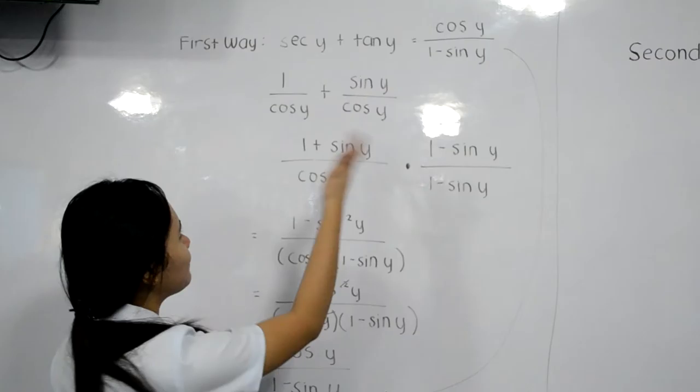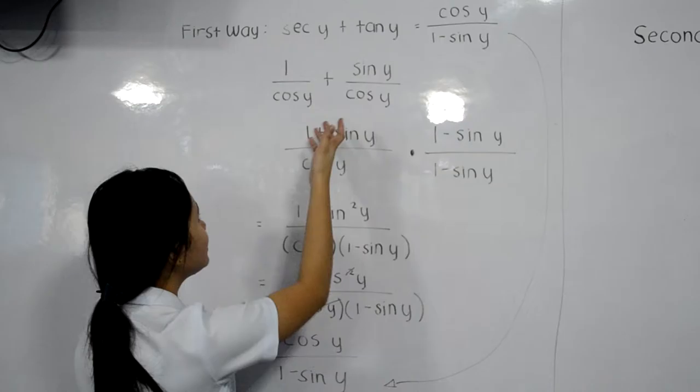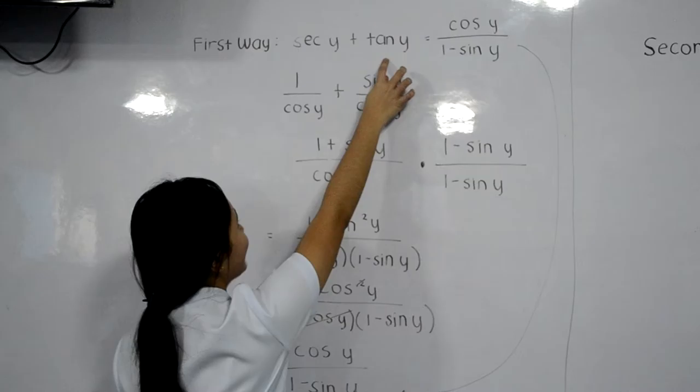Let's prove tangent y plus secant y equals cosine y over 1 minus sine y. The equivalent of secant y in the reciprocal identities is 1 over cosine y, and the equivalent of tangent y in the quotient identities is sine y over cosine y.